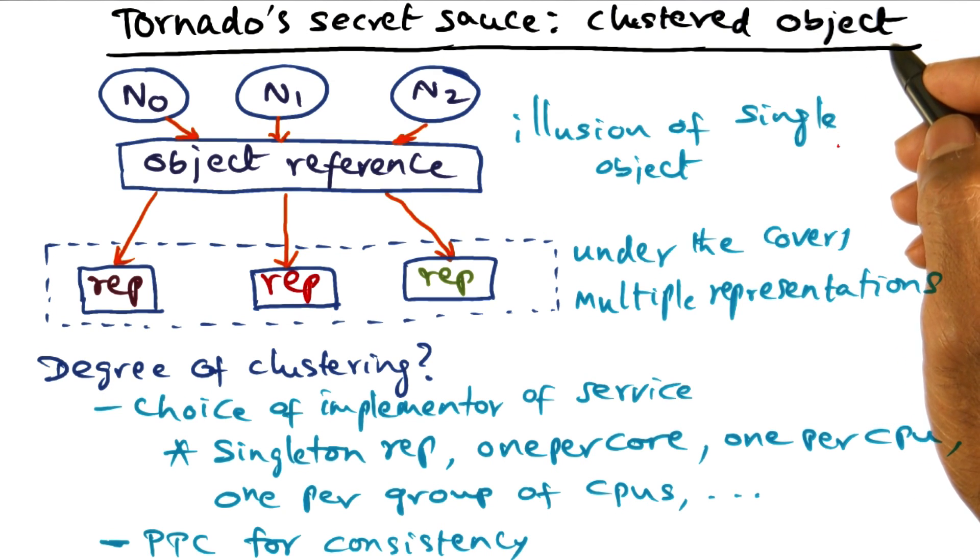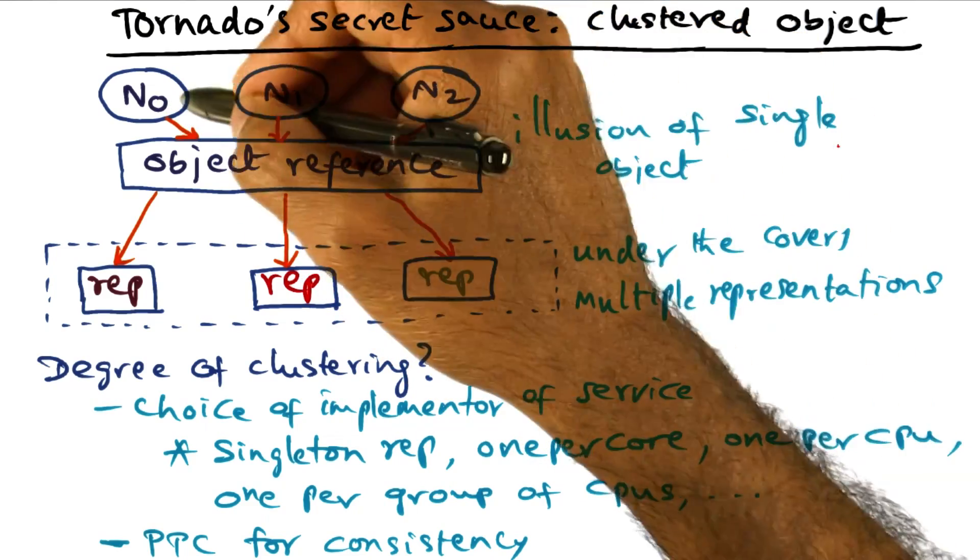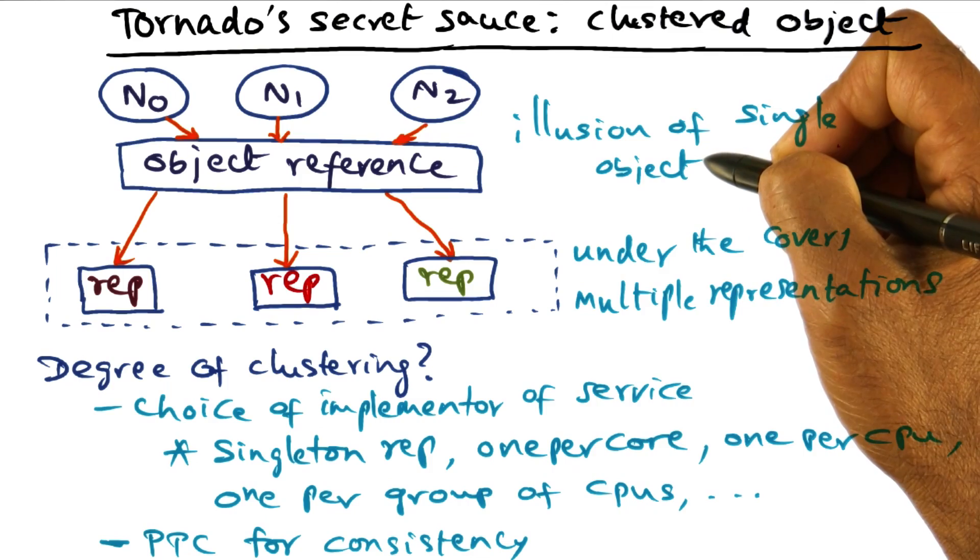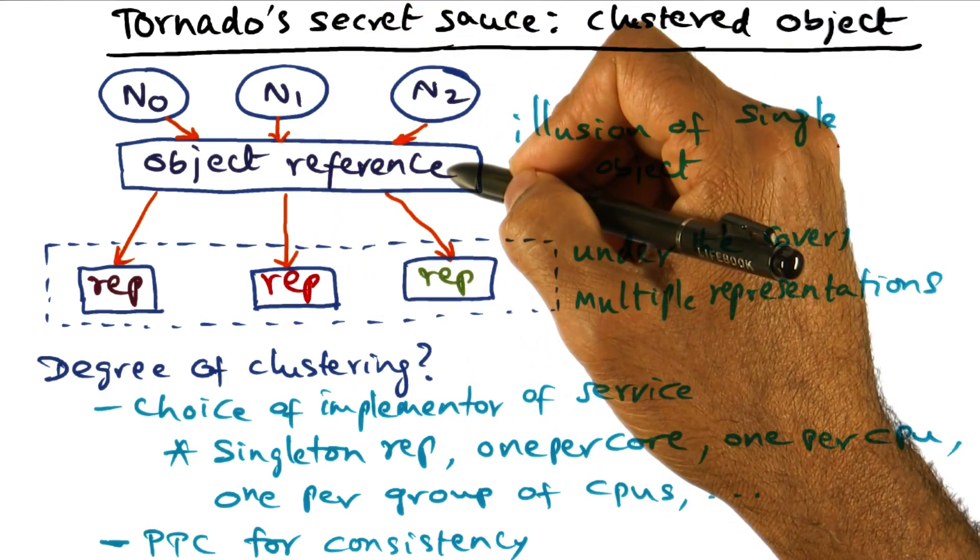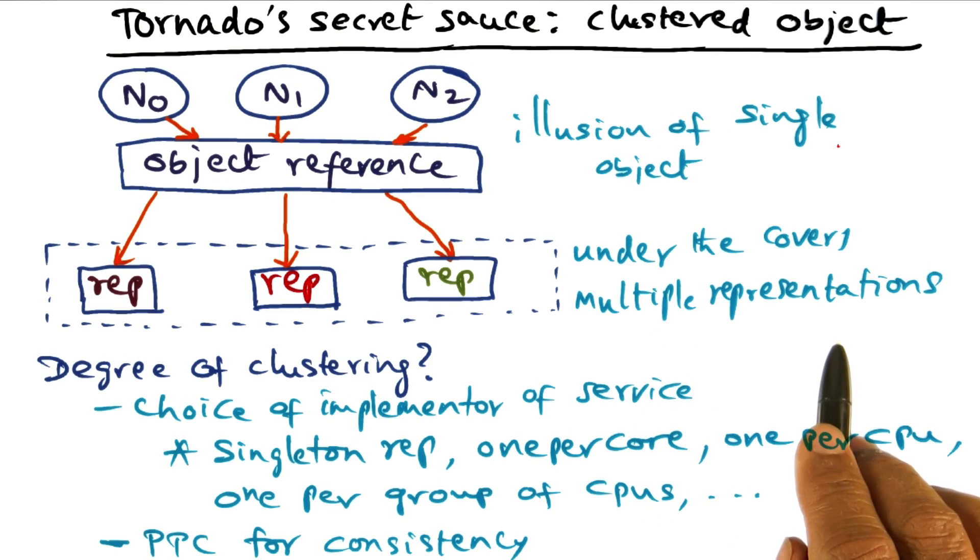The idea is that from the point of view of all the pieces of the operating system executing on the different nodes, there's a single object reference. The object reference is the same, but under the covers may have multiple representations.